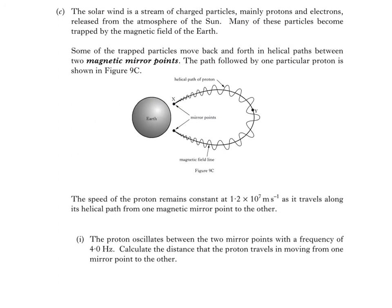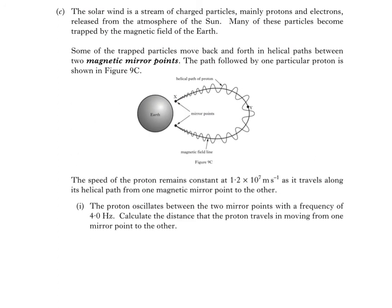Again, we'll need more space to work out the answer. This is an easy enough question because we just have to use the equation distance equals speed times time, although it might take a while to realize this is how it's calculated. We're told that the proton oscillates between the two mirror points with a frequency of 4 hertz. So the time to move from X to the next mirror point, then back, the period, can be calculated using this equation.